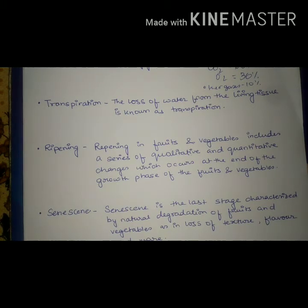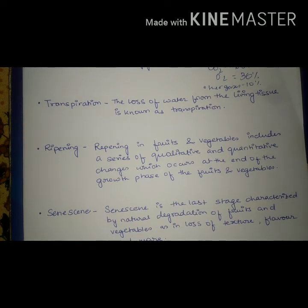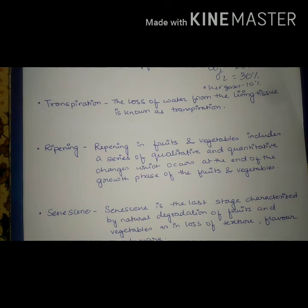The next term is ripening. Ripening in fruits and vegetables includes a series of qualitative and quantitative changes which occur at the end of the growth phase. Ripening causes a change in color due to the degradation of chlorophyll pigment and the formation of anthocyanins and carotenoids. There are also changes in flavor because starch gets converted into sugar, and there is a decrease in total organic acid. Ripening makes fruits more palatable for consuming.